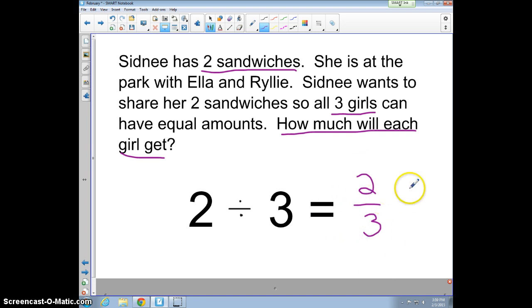And we can tell this is reasonable because, as we know the relationship of fractions and division, two over three is the same as two divided by three, which again is what our original math expression is. That's how you divide numbers where your quotient is a fraction or a mixed number.